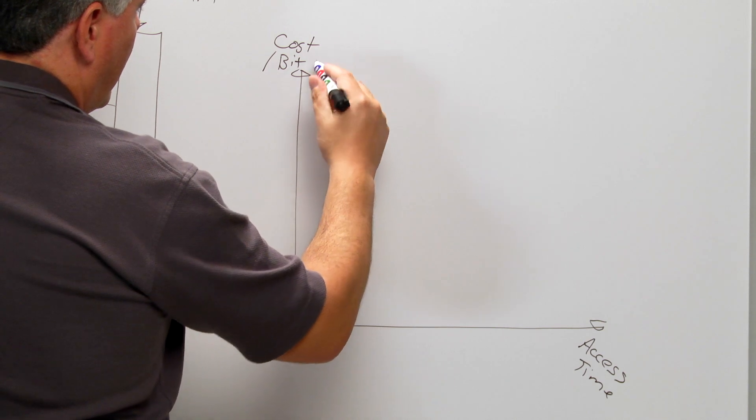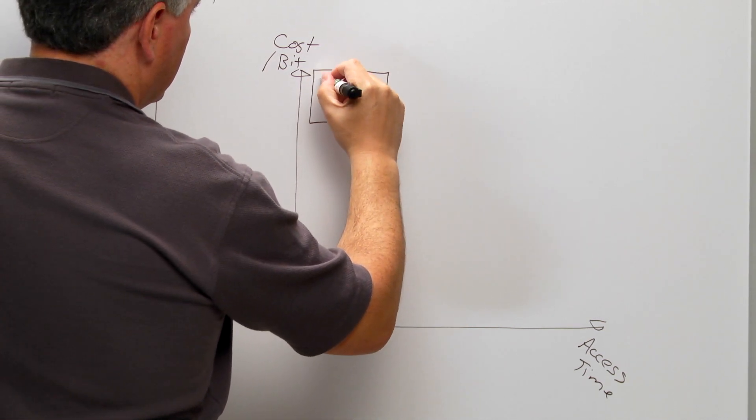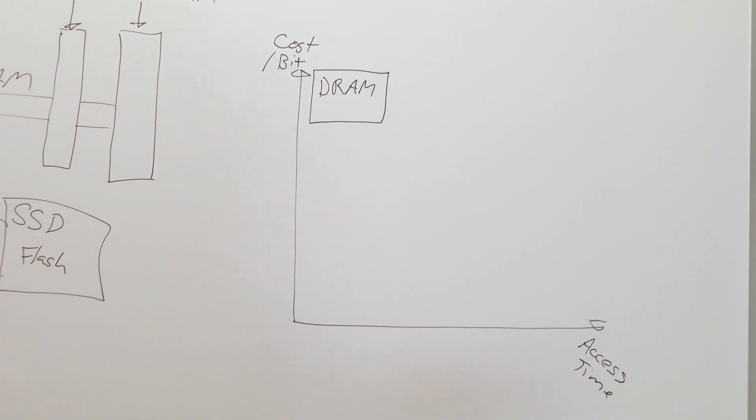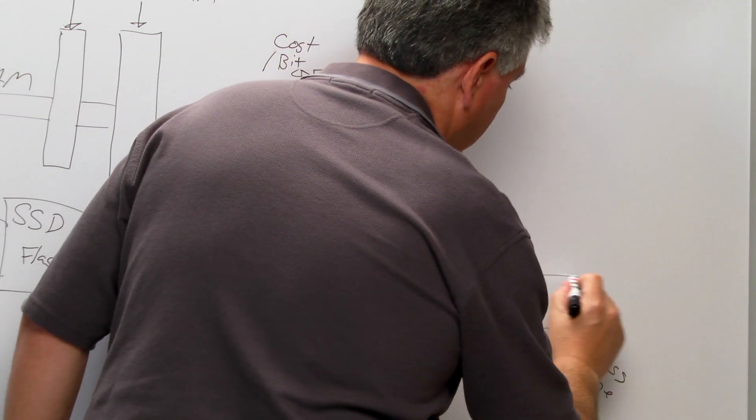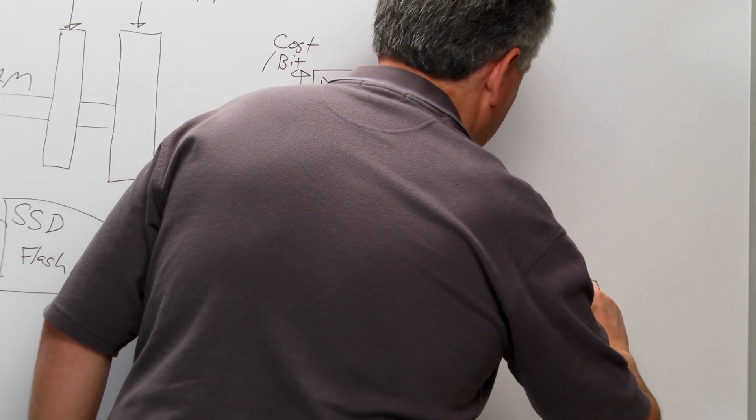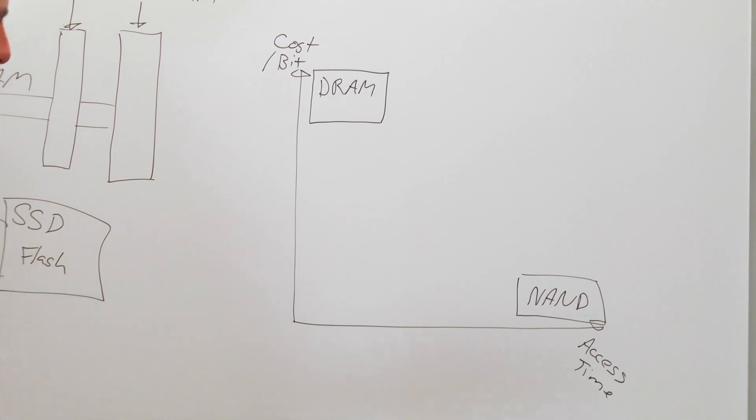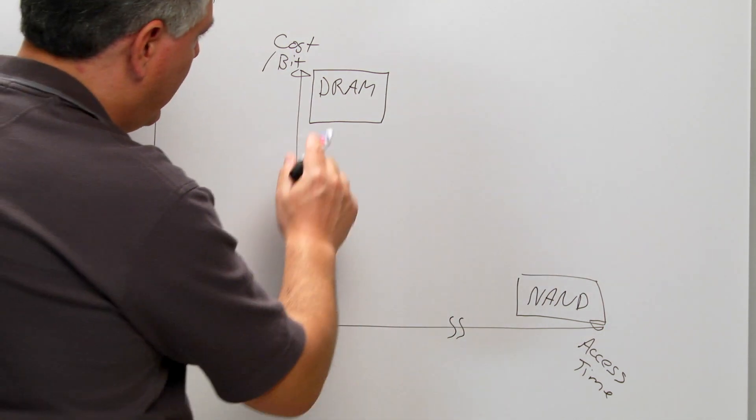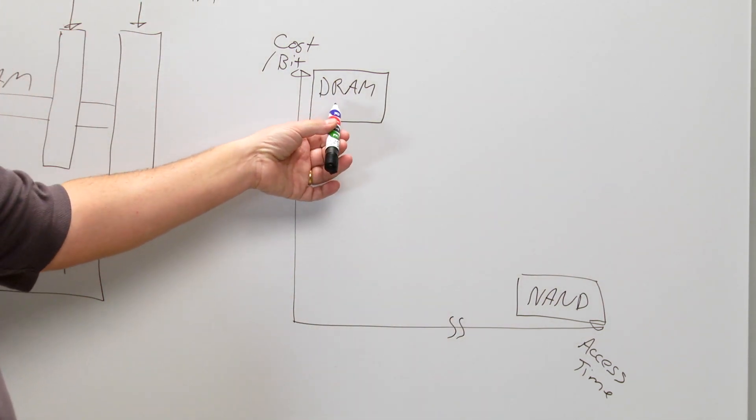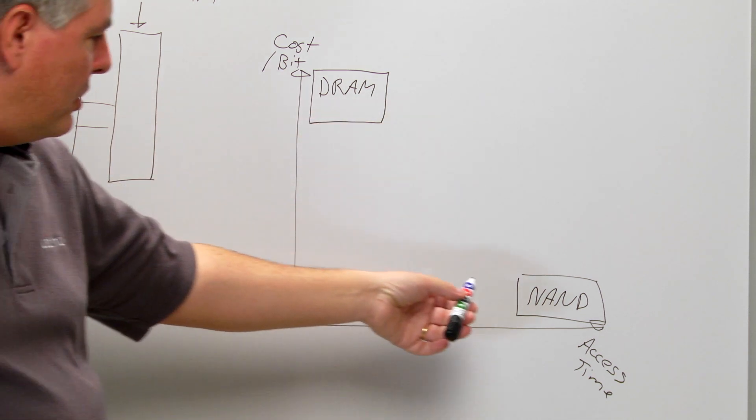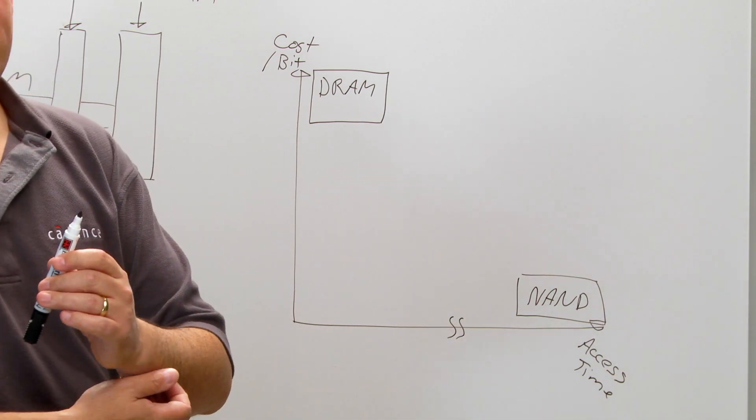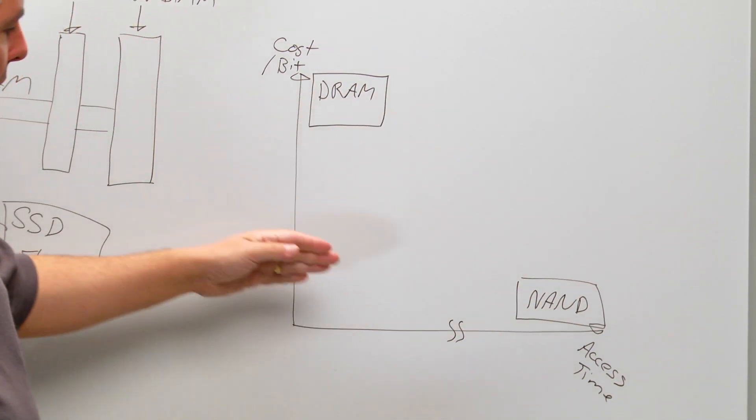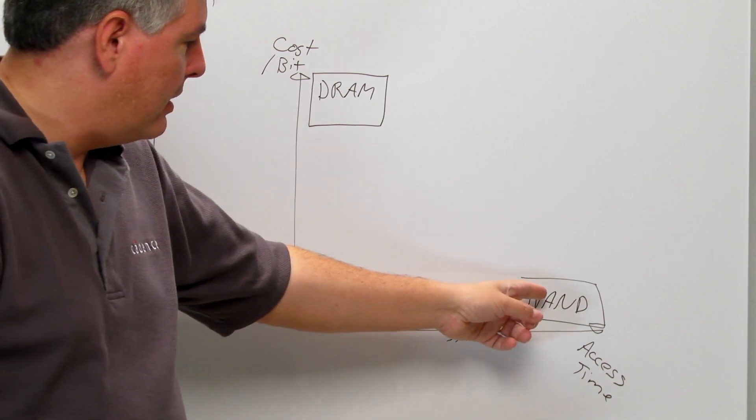So DRAM offers us a fairly high cost per bit, but at a fairly good access time. We get pretty good access time out of our DRAM devices. NAND flash devices, on the other hand, exist sort of down in this space here. Their access time is long, and this may be two to three orders of magnitude in, on this axis, between the DRAM access time, which is typically 10 to 15 nanoseconds, to a NAND flash access time, which might be 50 to 75 microseconds or 50,000 to 75,000 nanoseconds. So really big difference in the access time between the DRAM devices and the NAND flash devices.